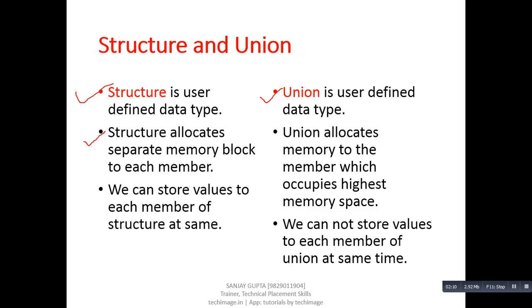So we have already seen with the help of diagram of memory location that each member of structure occupies separate memory. In case of union, union allocates memory to the member which occupies highest memory space. We have already seen the memory location of union in previous slide.